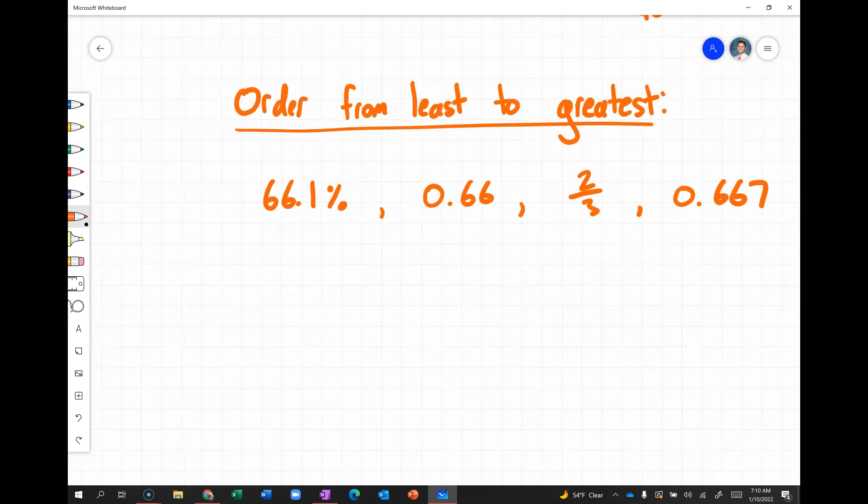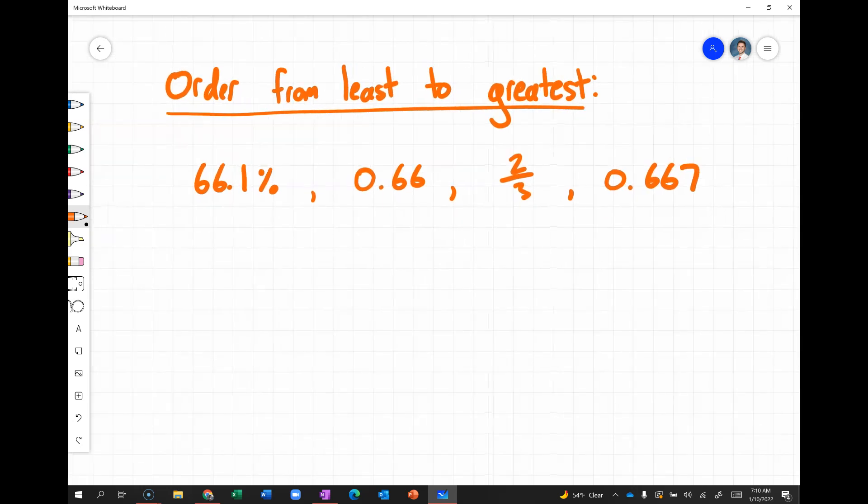So, finally, let's look at ordering these numbers from least to greatest. So, in order to do that, we need to have them all in the same format. So, right now, we have one number as a percent, two as decimals, and one as a fraction. So, the easiest thing to do would be to write these all as a decimal. So, first, we can start with 66.1%. We need to divide that by 100, which would mean moving our decimal twice to the left. And, we get 0.661.